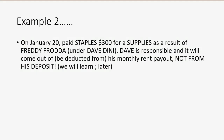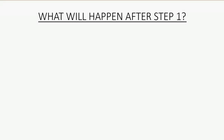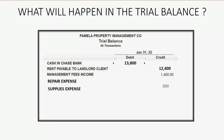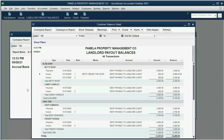Let's do a second example. On January 20th we paid Staples $300 for supplies as a result of Freddy Froda, a tenant under Dave Deni. Dave is responsible and it will be deducted from his monthly rent payout, not from the deposit. After step one, supplies expense will go up in our company because QuickBooks doesn't know the landlord is responsible yet, and cash will go down. Supplies expense will show up in the trial balance for the first time as $300, and cash will go down by $300.